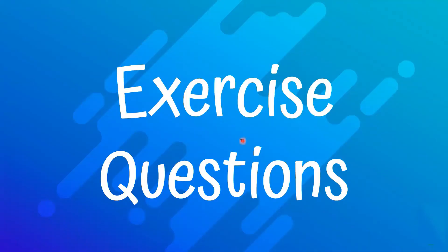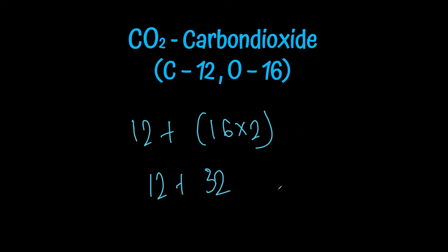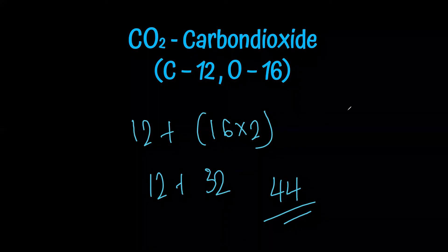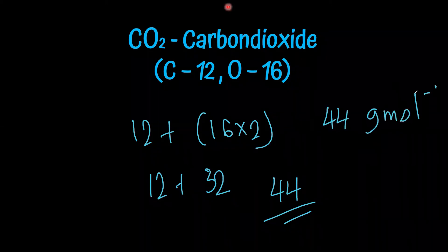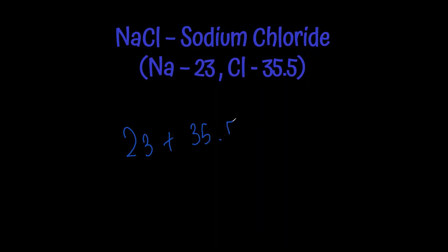Exercise questions: CO2 — 12 + (16×2) = 12 + 32 = 44. The molar mass of carbon dioxide is 44 g mol⁻¹. NaCl, sodium chloride — 23 + 35.5 = 58.5. The molar mass of sodium chloride is 58.5 g mol⁻¹.